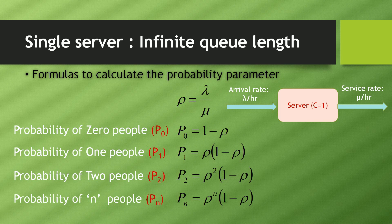If you have calculated the value of rho, you can easily calculate probability of 0, 1, 2, or n people. If you want to derive these formulas, the link is given in the description box. Probability of 0 people in the system P0 equals 1 minus rho. P1 equals rho multiplied by (1 minus rho). P2 equals rho squared multiplied by (1 minus rho). Similarly, Pn equals rho to the power n multiplied by (1 minus rho).